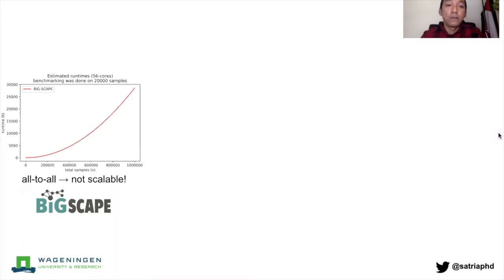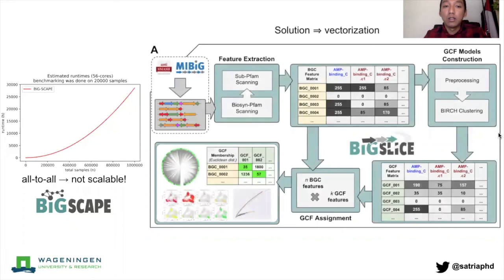What we end up with is an approach where we convert each BGC into numerical feature metrics. The reason for doing this is that we can then use different clustering algorithms that scale in linear or even sub-linear fashion like k-means.